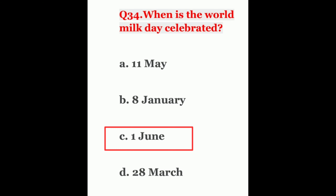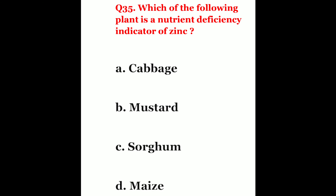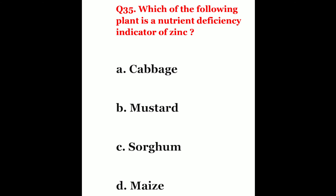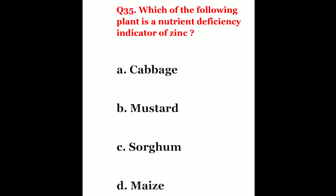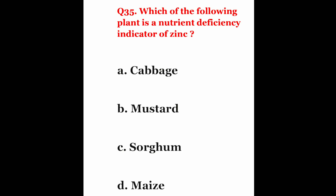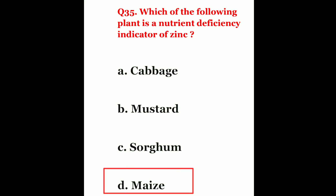Question 35. Which of the following plant is a nutrient deficiency indicator of zinc? The options are cabbage, mustard, sorghum, or maize. The correct answer is maize.